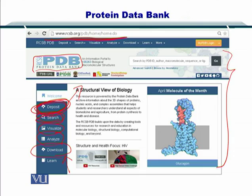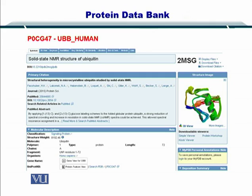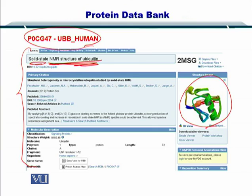I'll give you an example of a protein I searched using this PDB. I simply input human ubiquitin, and I got this ID. This is where I was taken to. As you can see, it's a solid-state NMR structure of ubiquitin. This ubiquitin structure has been obtained using NMR, which is a very high-resolution technique for studying the structure of proteins. The publication in which this structure was reported is also shown here.